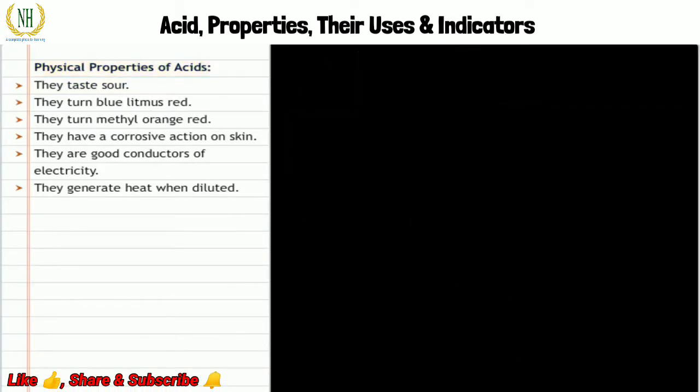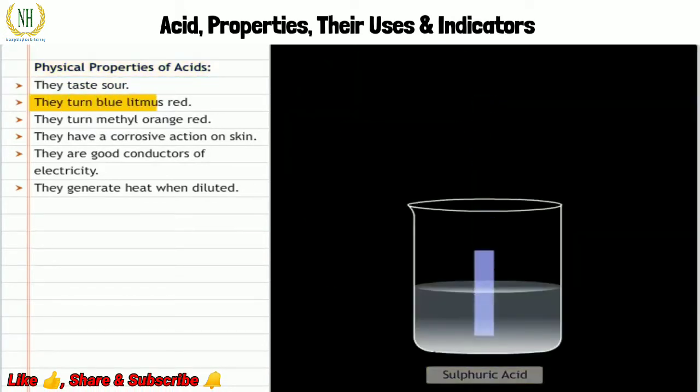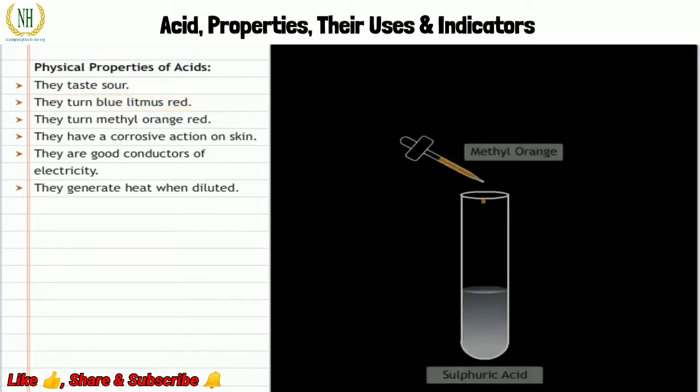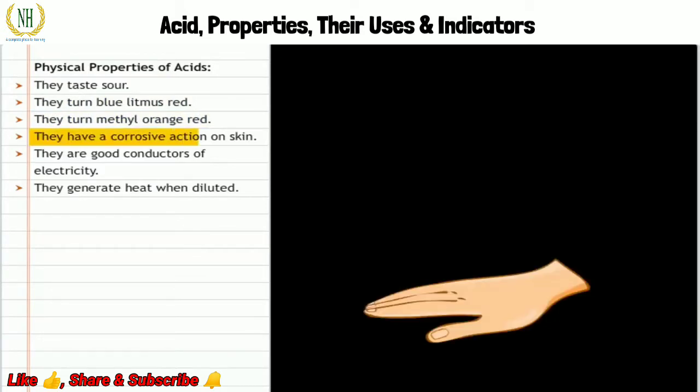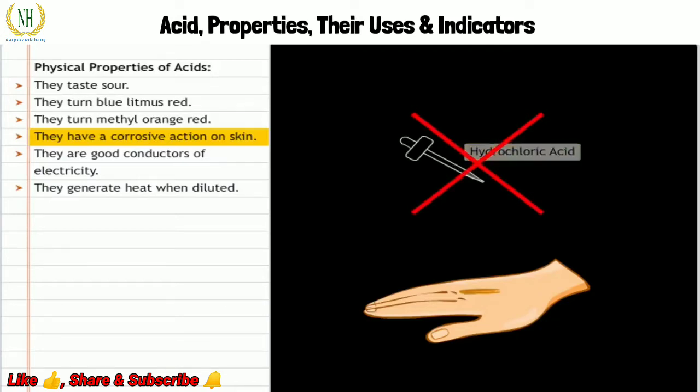We already know that acids taste sour. Acids also have other physical properties. Acids turn blue litmus red. They also turn methyl orange red. Acids have a corrosive action on the skin. Sulfuric acid stains the skin black, nitric acid stains the skin yellow, and hydrochloric acid leaves an amber stain on the skin.